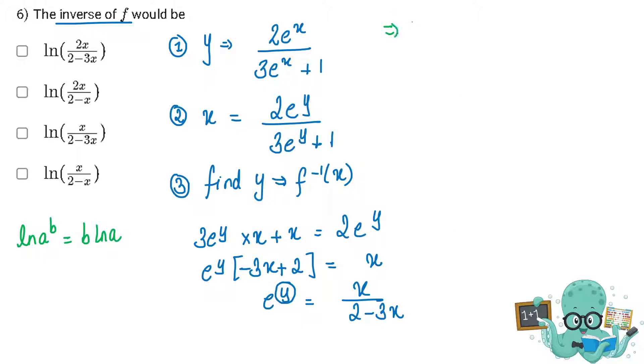If I take ln on both sides, it will be y ln e. The base of ln is e. So basically, log with the same base and same in the bracket gives the answer as 1. ln e is nothing but 1, which equals ln of x upon 2 minus 3x. So now my y equals ln x upon 2 minus 3x.